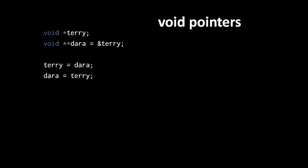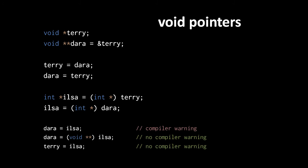So here we can assign dara to terry and vice versa without any casting, even though void pointer and void pointer pointer are different types. The same is not true of non-void pointers, such as here when we must cast both terry and dara when we assign them to int pointer variable ilsa. When assigning int pointer ilsa to dara and terry, we don't need to cast, but the assignment of ilsa to void pointer pointer dara will trigger a compiler warning unless we make the cast explicit. The C99 standard decided that implicit casts to void pointers are okay, but implicit casts to void pointer pointers are too error prone to pass without a warning.